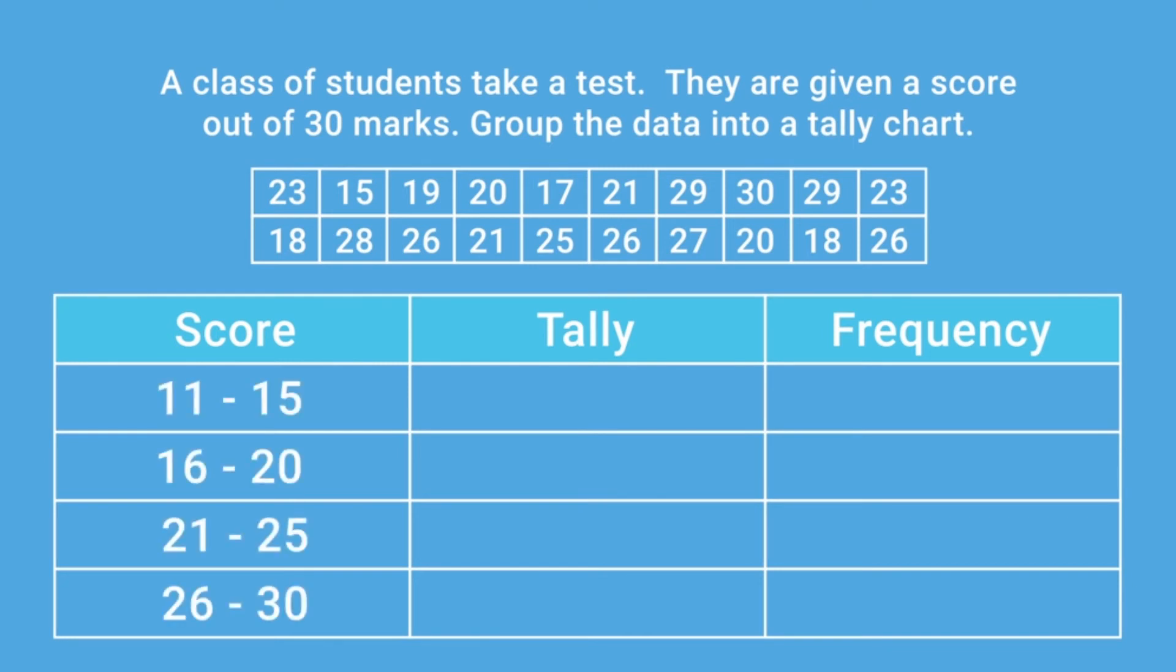Now we have our groupings, we can begin to fill the tally column in by placing a tally mark in each group a value falls in. For example, for the first number, 23, we need to place a mark in the 21 to 25 group. Complete this process for all the remaining numbers.